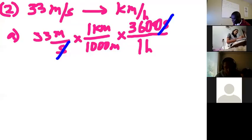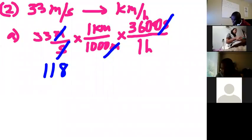Pay attention to the conversion factors. You must write the conversion factors in a way that the old units cancel out and you're left with the new units. So we want seconds to cancel out, we want meters to cancel out, and we want to be left with kilometers over hours. So 33 times 3,600 divided by 1,000 will give us 118.8 kilometers per hour.